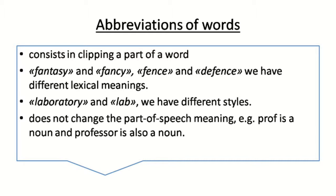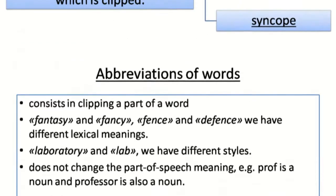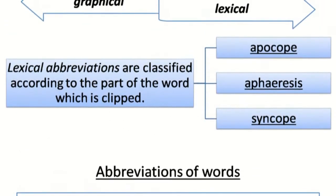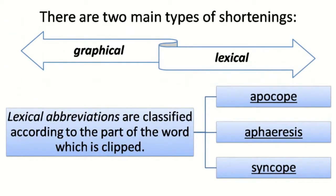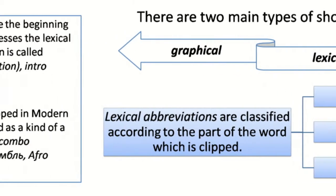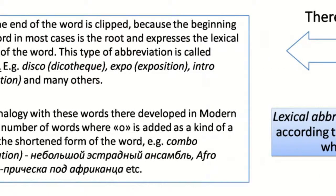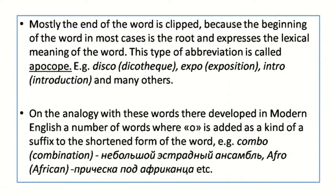There are some more types of abbreviations shown on the slide. As already mentioned, the two major types are graphical and lexical. Lexical abbreviations are classified according to the part of the word which is clipped — the types visible on the slide include apocope, apheresis, and syncope.